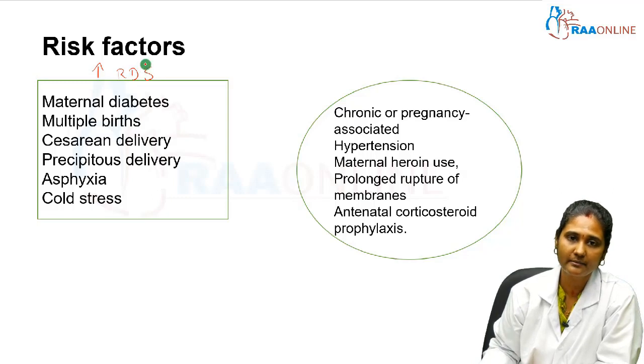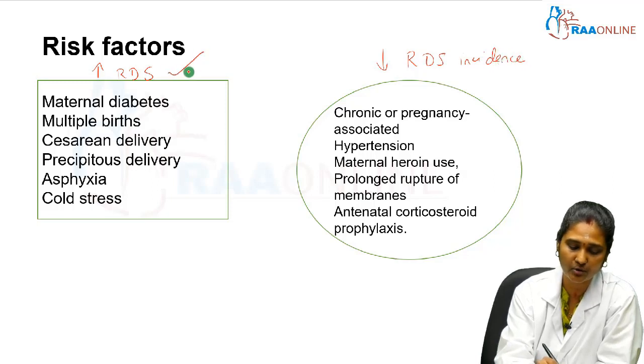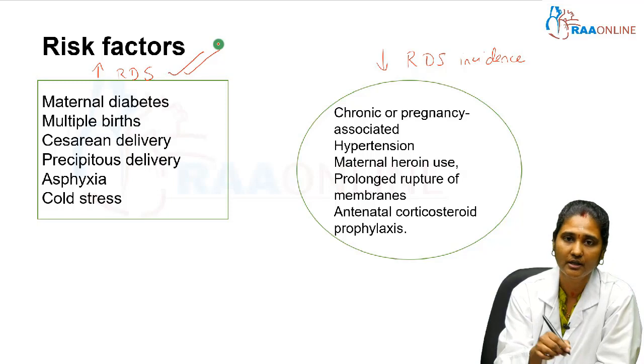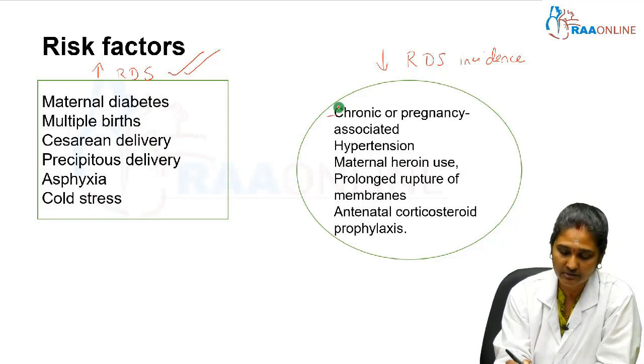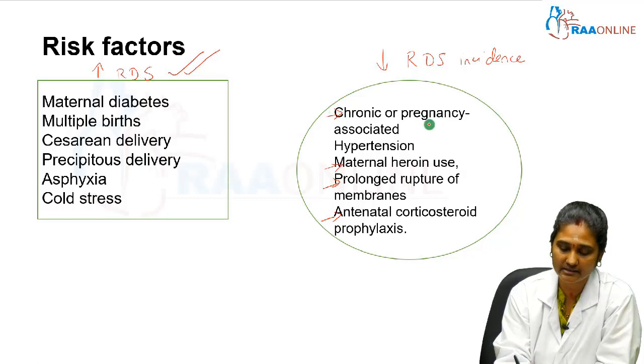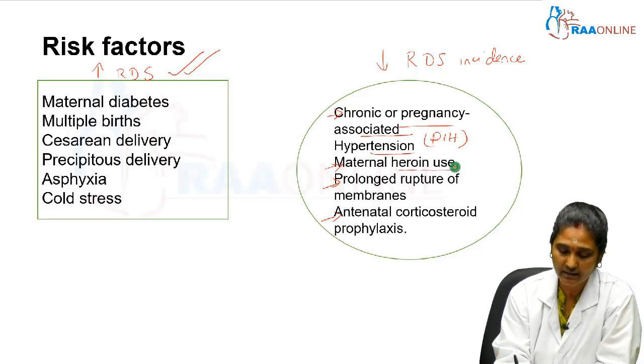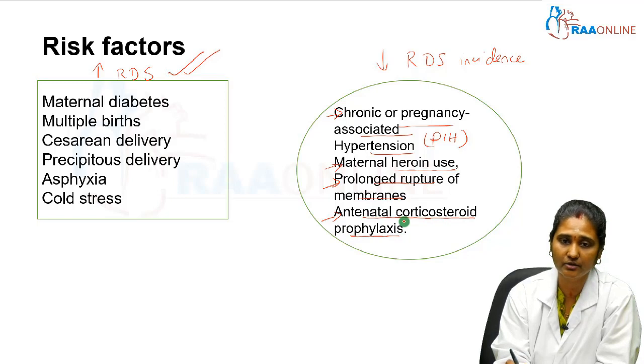These are factors which decrease the respiratory distress syndrome incidence in newborns. We are more prone to read the factors which precipitate the cause, but certain conditions decrease the risk. First, any chronic or pregnancy-associated hypertension, that is PIH, is known to decrease the incidence of respiratory distress in newborn. Also maternal heroin use.